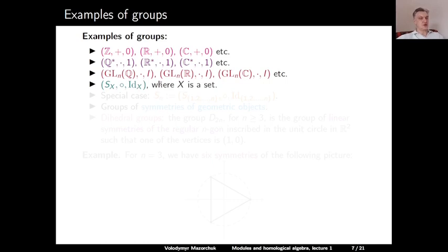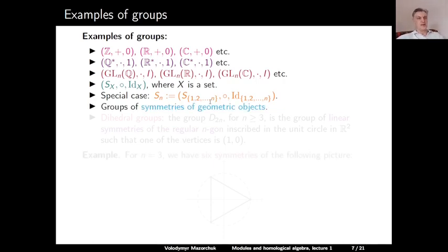Next, the matrix groups: the group of all invertible n×n matrices with rational coefficients, with respect to matrix multiplication and the identity matrix as the unit element. We can also take coefficients to be real or complex numbers. Next is the symmetric group: the group of all invertible maps from X to X, with respect to the composition of maps and the identity map as the unit element. The special case is the symmetric group S_n, where the set X is taken to be {1, 2, 3, ..., n}. The next case is just groups of symmetries of geometric objects — rotations and reflections — which are isometries of the space with respect to composition of maps.